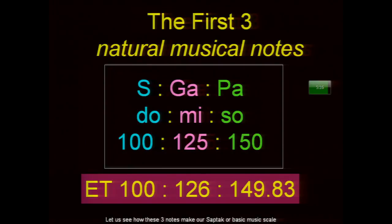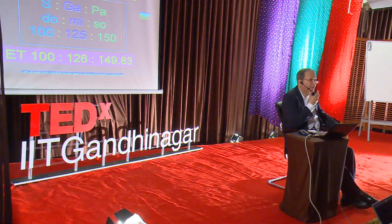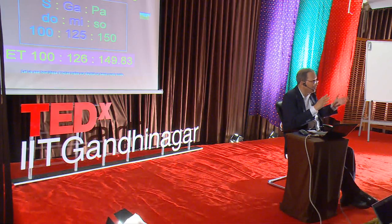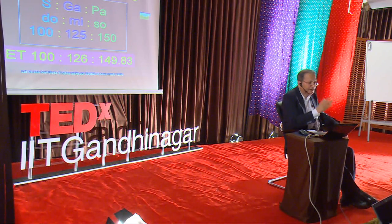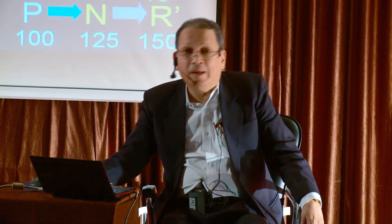Sa, Ga, Pa are the first three natural harmonics at a frequency ratio of 100 to 125 to 150 — Ga is 25% higher than Sa, Pa is 50% higher. In the equitempered scale they are at 100 to 126 to 149.83, and therefore the equitempered scale is dissonant, not consonant like the Indian scale.